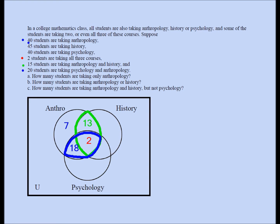Now for the history circle: 45 students are taking history. I don't know the individual values for the only-history region and the history-psychology-but-not-anthropology region, but I know the four numbers in the history circle must sum to 45. We already have 13 plus 2 equals 15 in the anthropology-history football, so those remaining two unknown regions must add up to 30, because 30 plus 13 plus 2 is 45. This is why the problem seems like it doesn't have enough info — you can't find each unknown individually, only their sum.